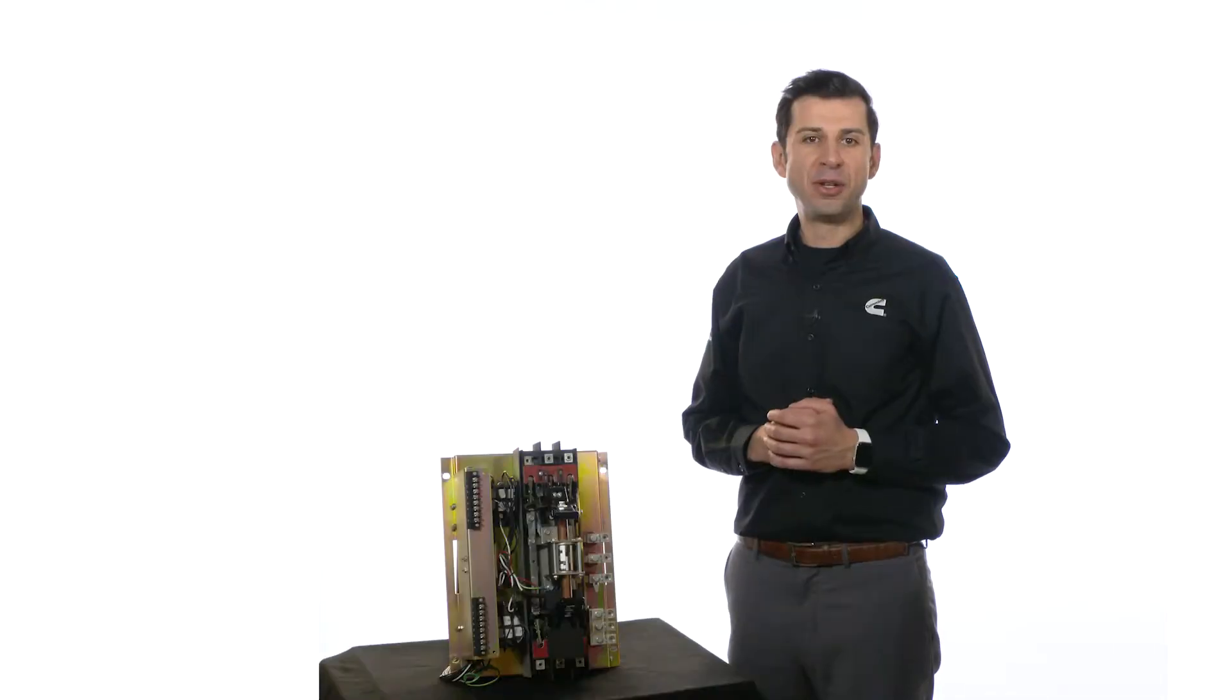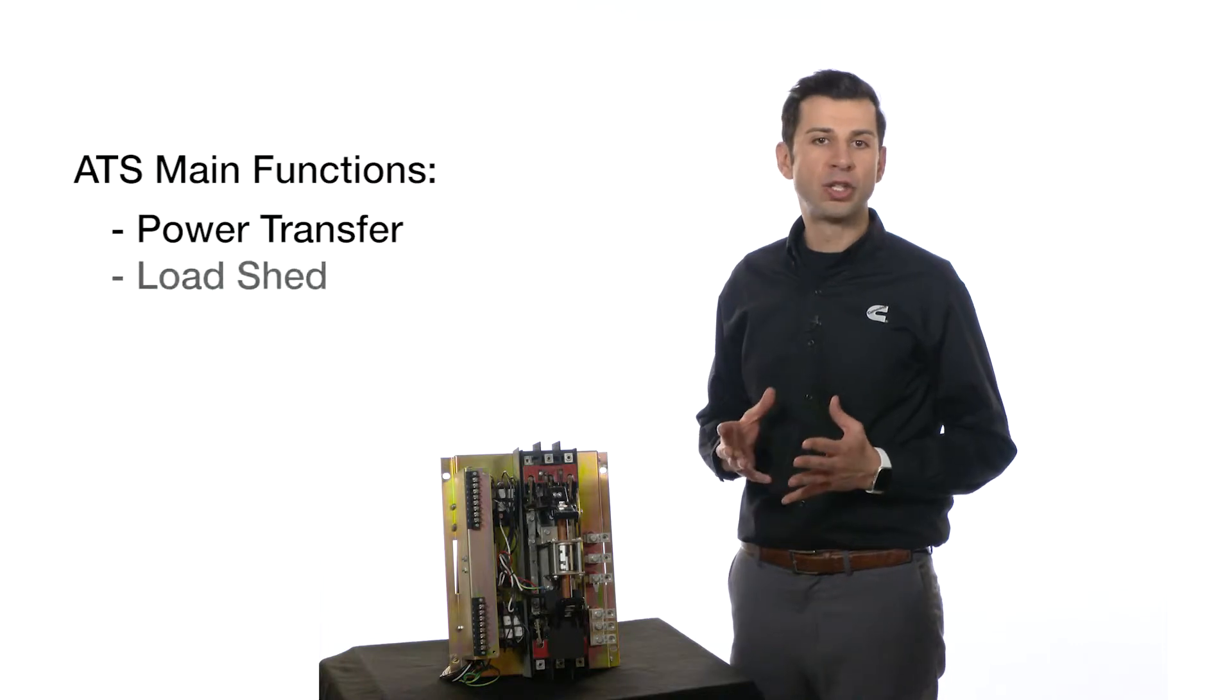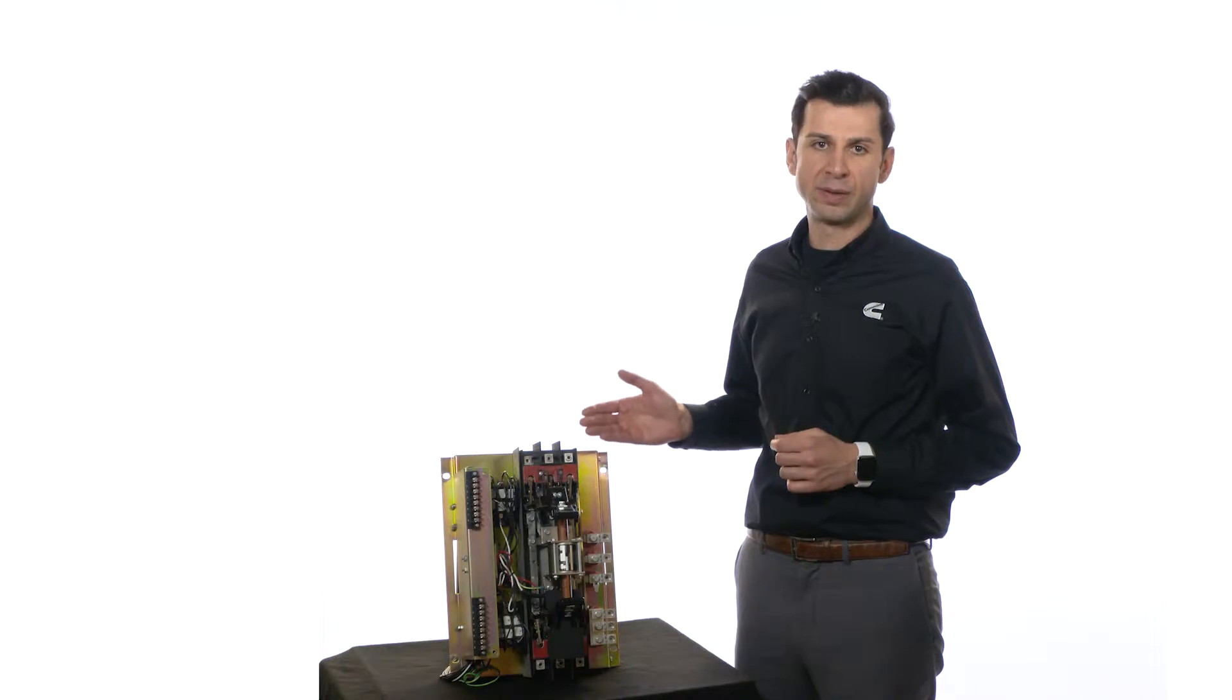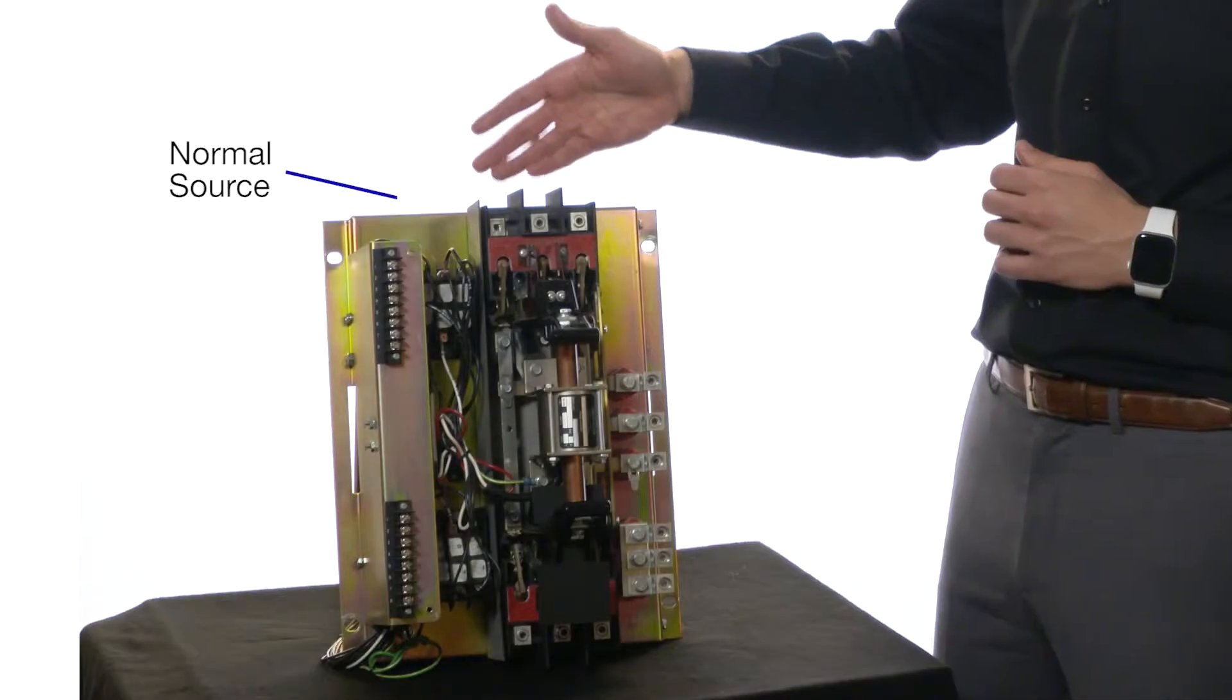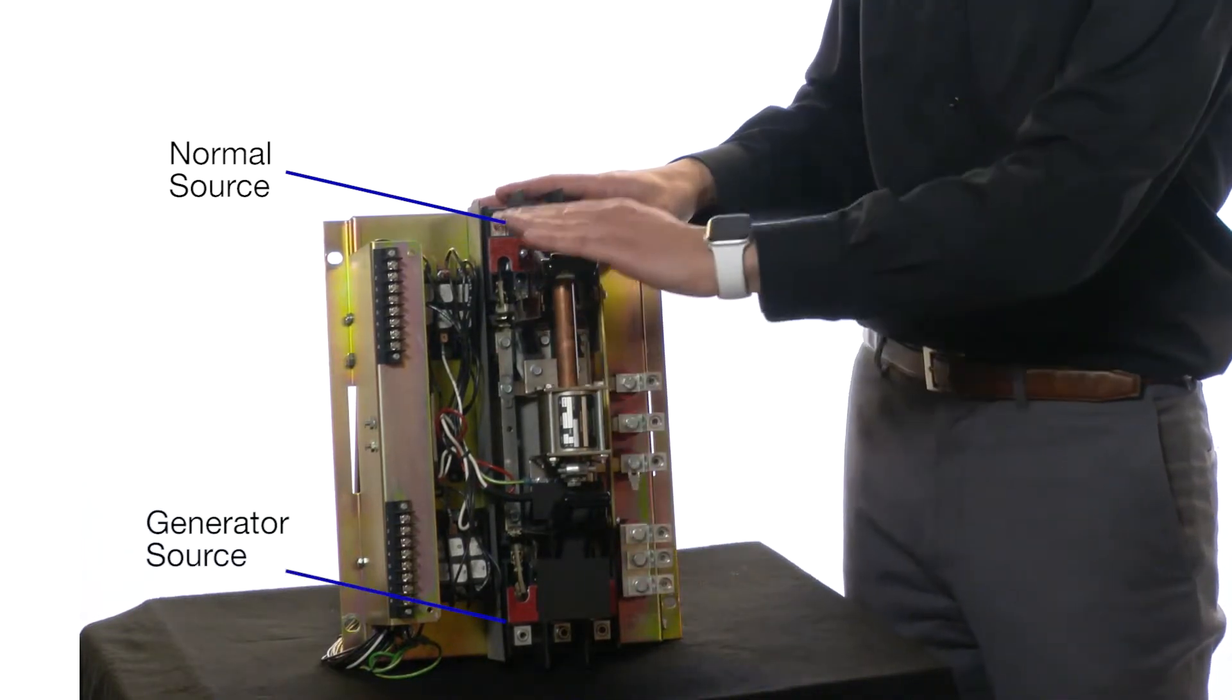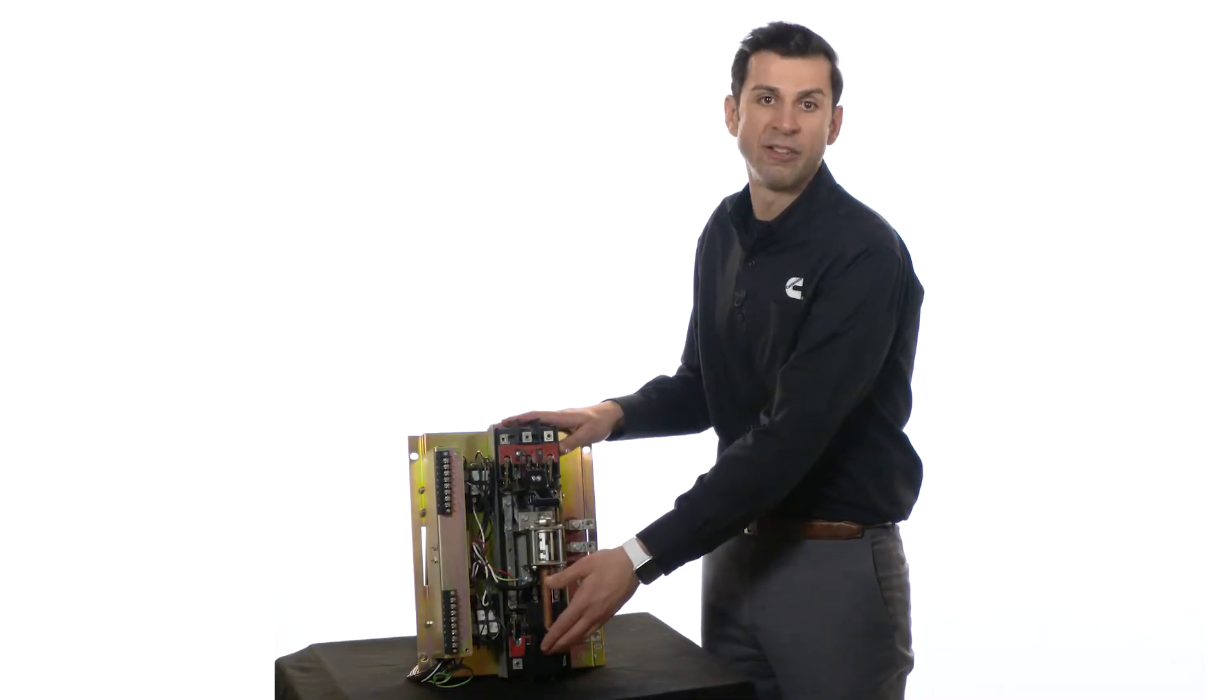Now I will talk about the major functionalities of an ATS: power transfer, load shed, and exercising. Here is the mechanism of a three-pole, three-position transfer switch. The loads can be connected to the normal source, depicted as the utility, or to the generator source, or to neither source, also known as the center-off position.